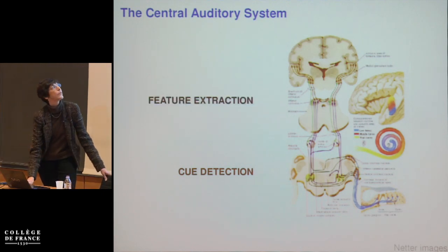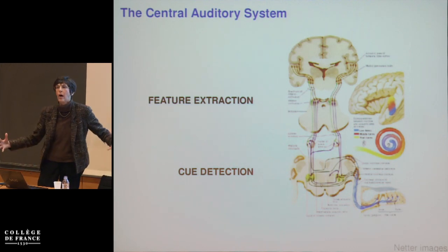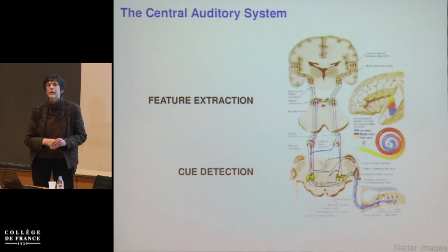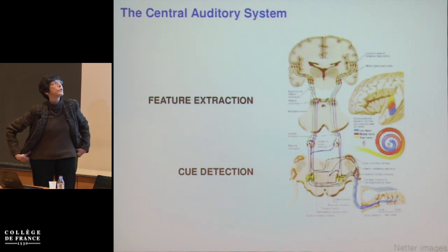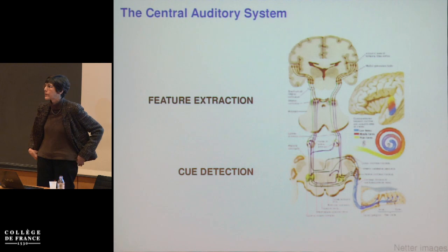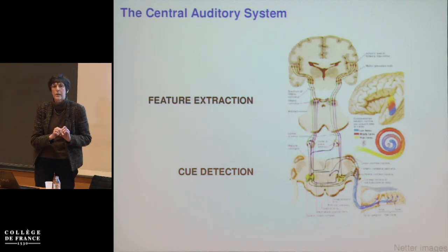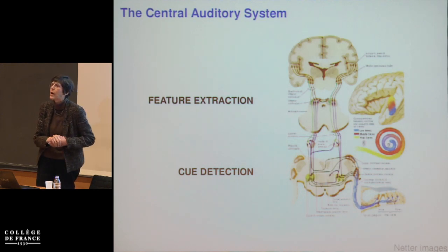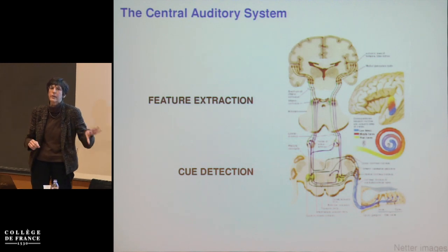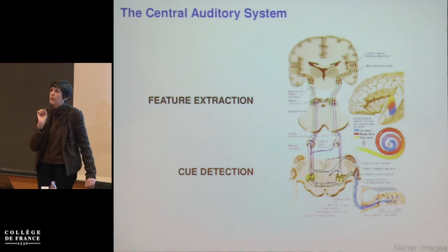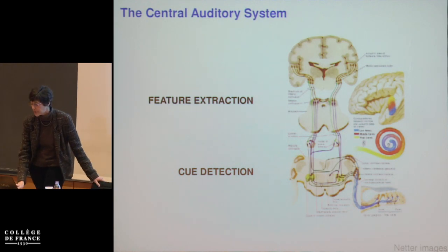At the level of the midbrain — the inferior colliculus — where all brainstem information converges, the inferior colliculus is better thought of as doing feature extraction. This is where neurons start to show responses to true properties of auditory objects, such as their location, combining cues like interaural level and interaural time differences into a representation of a property of an auditory object.